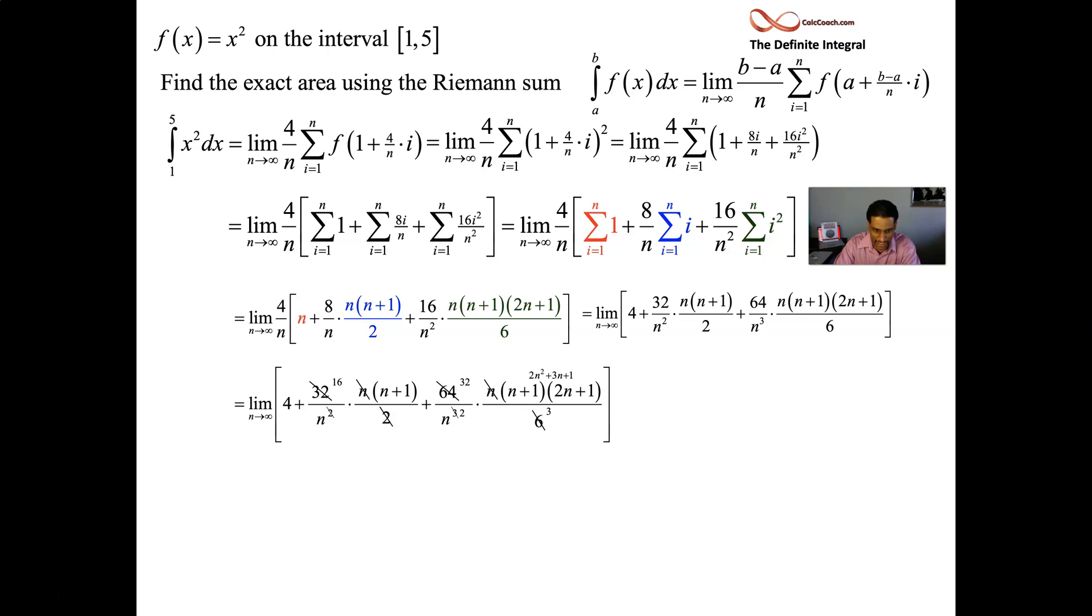Now it looks a mess, let's simplify it. We have four, we have 16 times n plus one over n, we have 32 times 2n squared plus 3n plus one over 3n squared. It's a limit at infinity, so it's just a matter of degree of numerator equals degree of denominator - the ratio of their coefficients. Or you can break it up further into many fractions.